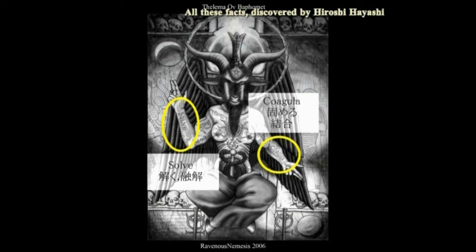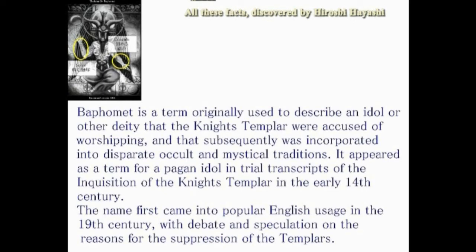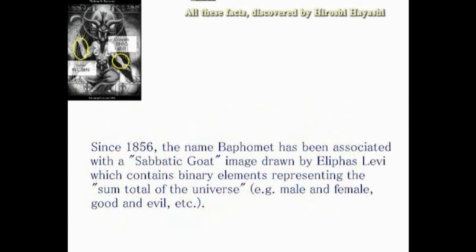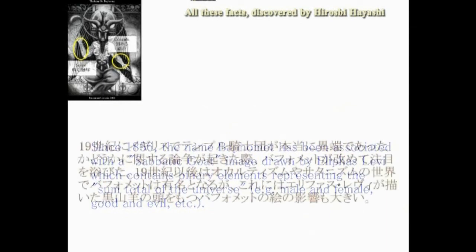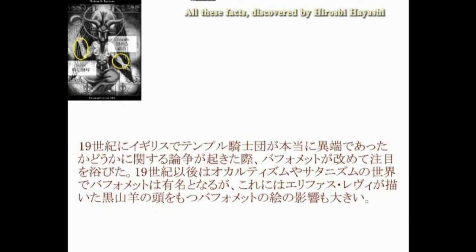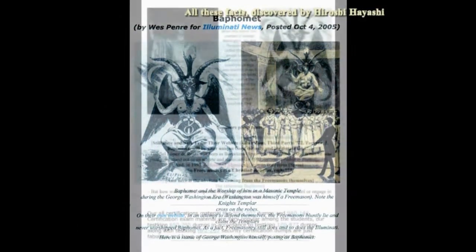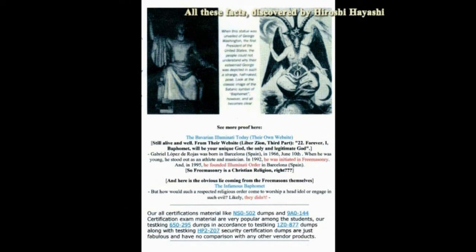バフォメットの手について：Solve、誘拐、そして結合という意味です。一度私たちの常識を分解して、そしてもう一度組み立てろという意味に、私、林博史は解釈していますが、それはあくまでも私の解釈です。バフォメットについては、どこに起源があるのかいまだに何も分かっていないということです。いわゆるオカルトのシンボルとして使われているという程度、あるいは悪魔の大王、つまりThe King of Satanとして位置付けられています。が、本当にそう考えて片付けてしまって良いものなのでしょうか。